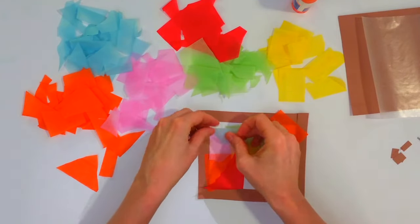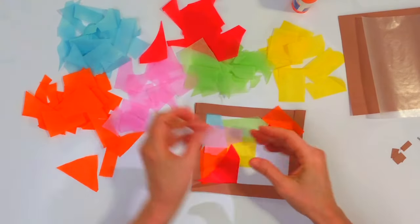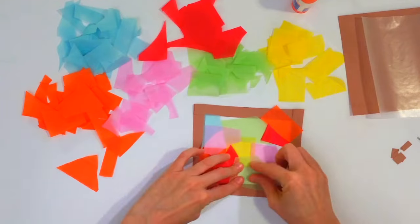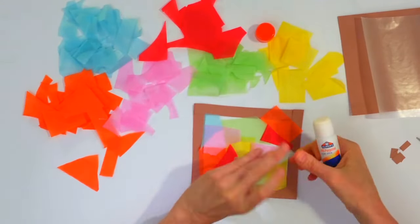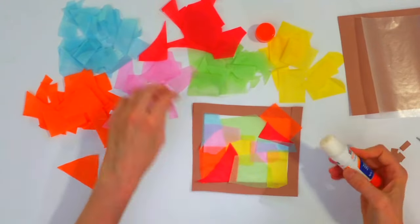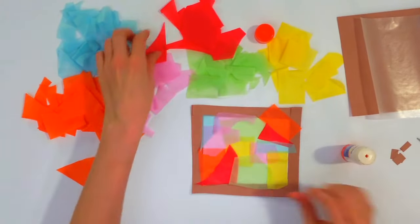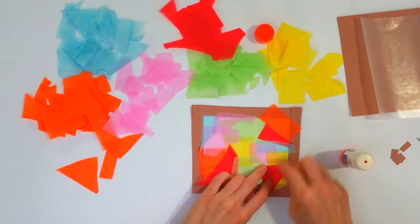Make sure every bit is covered and you can do a pattern or you can just put them on however you like. If you start to get too much overlapping, you can put glue on the actual pieces so they'll stick.